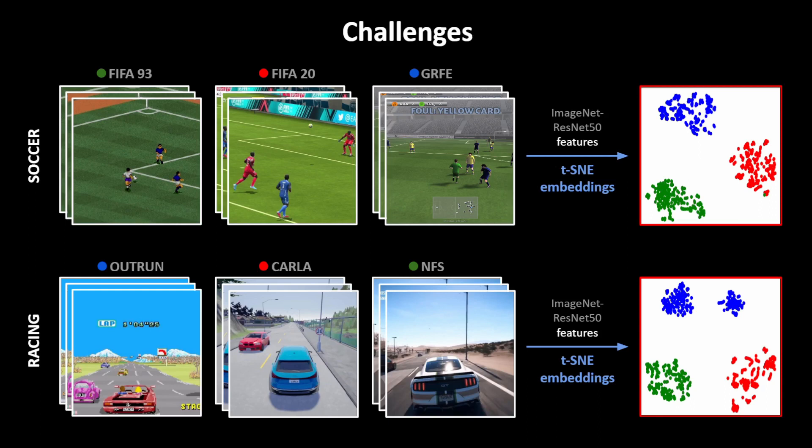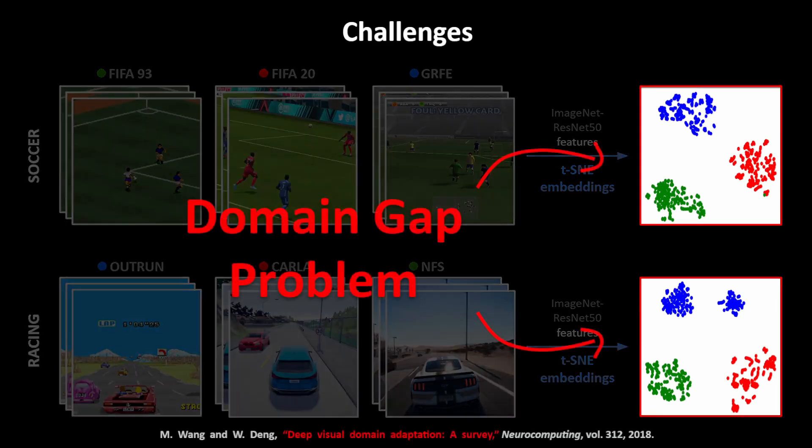An ideal encoder should not exhibit such gaps between different games of the same genre. This problem is commonly referred to as the domain gap issue, and it is the main challenge that we want to overcome in our work.